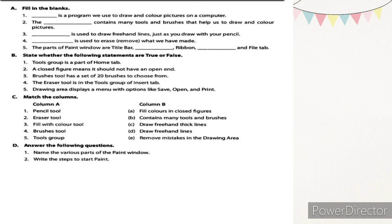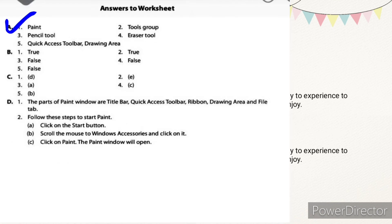Answer the following questions. First: name the various parts of the paint window. The parts are title bar, quick access toolbar, ribbon, drawing area, and file tab. File tab you can also write as menu bar — both are correct.